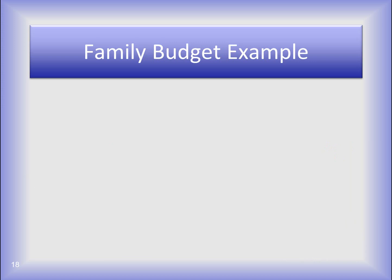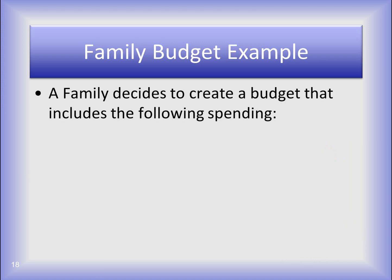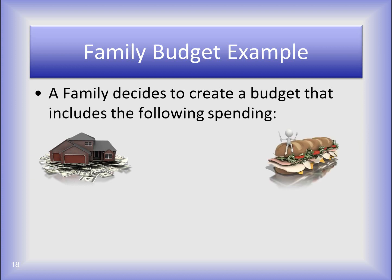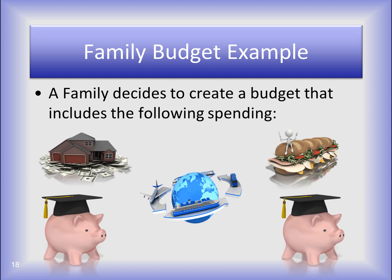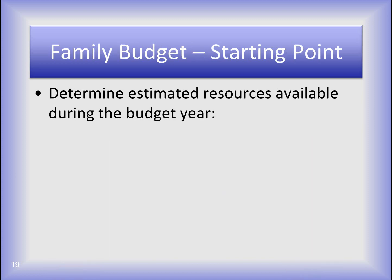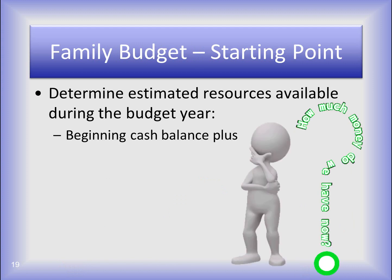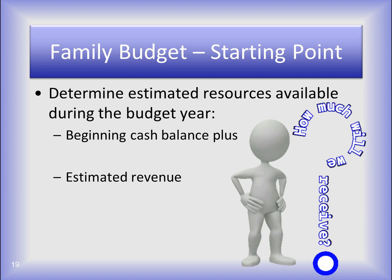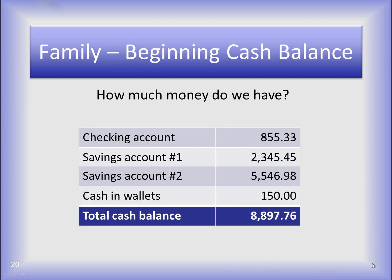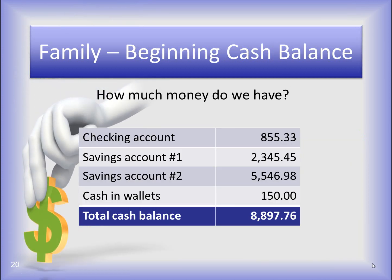Let's explore how the budget is created using a family example. A family decides to create a budget that includes paying their monthly bills, eating out once a week, taking a vacation once a year, and saving for college for two children. They first have to determine the estimated resources available — what is their beginning cash balance? They have to answer the question: how much do we have? Then they calculate their estimated annual revenue by answering: how much will we receive? Our family makes a list of all their money in bank accounts and cash to arrive at the total beginning cash balance.